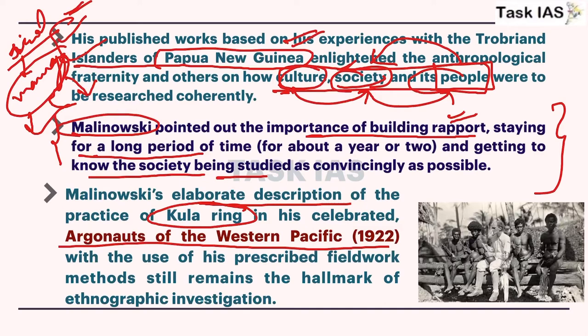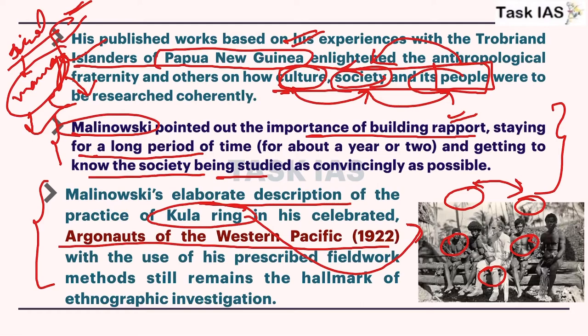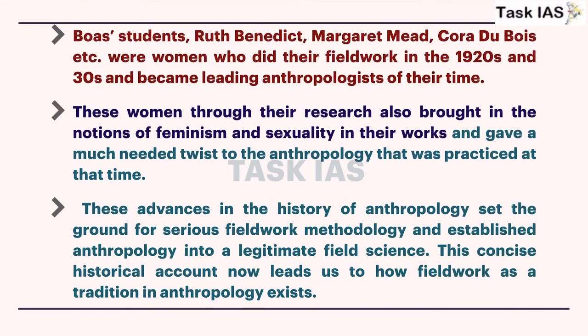Malinowski gave an elaborate description of the Kula Ring in his famous work, Argonauts of the Western Pacific, done during his fieldwork in Papua New Guinea. The Kula Ring is a ceremonial exchange between different islands of the Pacific Ocean, where these islands have a ceremonial exchange system — they exchange things not for economic value but for ceremonial, religious, or socio-cultural importance, although nowadays it is also treated as a source for economic transactions.